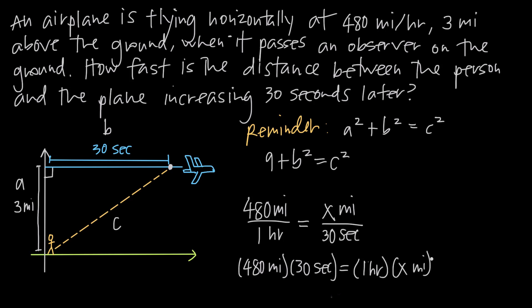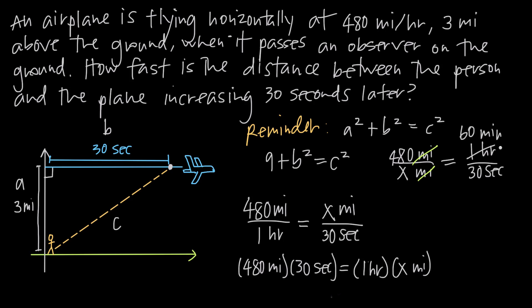Dividing both sides by x miles cancels x miles on one side, and dividing both sides by 30 seconds gives us 480 miles over x miles equals 1 hour over 30 seconds. We can cancel units: miles and miles. Converting 1 hour to seconds: 60 minutes times 60 seconds per minute equals 3600 seconds. Now we have seconds in numerator and denominator which cancel, leaving us with 480 divided by x equals 3600 over 30.